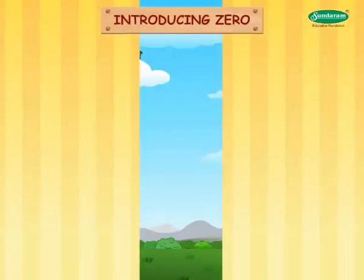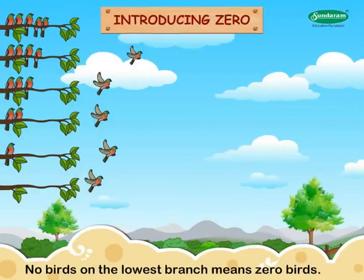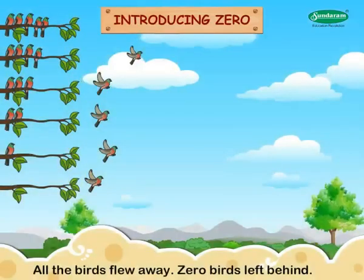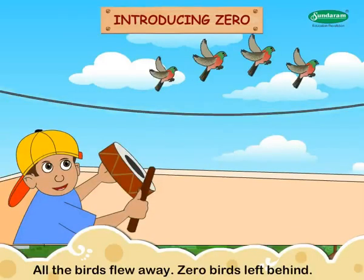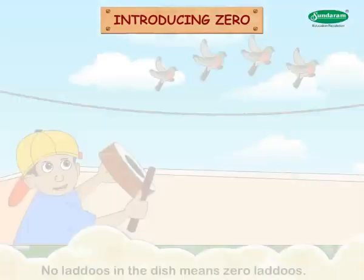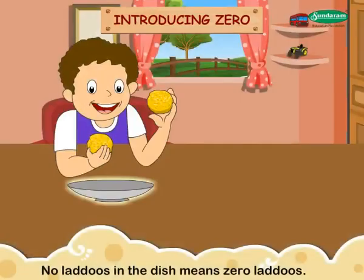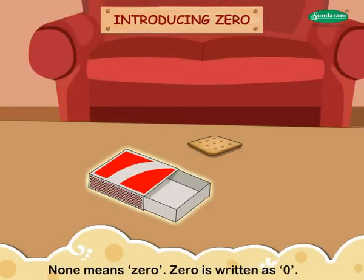Introducing zero. No birds on the lowest branch means zero birds. All the birds flew away. Zero birds left behind. No laddus in the dish means zero laddus. No matchsticks in the matchbox means zero matchsticks. None means zero.